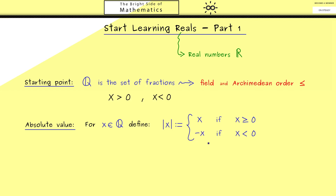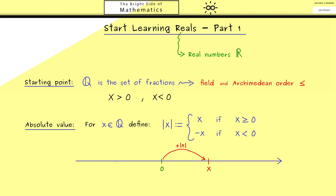Please recall this denotes the inverse element of x with respect to the addition. Hence what we get out of the absolute value is always a positive number or 0. A visualization on the number line is helpful here: if we have a positive number x, the absolute value tells us what we have to add to 0 to get to this number. If we have a negative number x, the absolute value tells us what we have to add to this number to get to 0. In both cases the absolute value gives us the distance between x and 0.